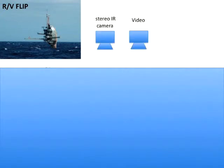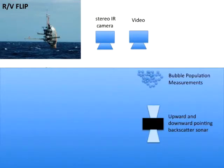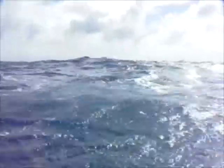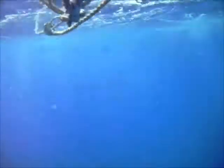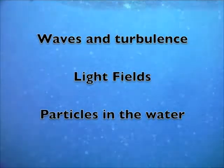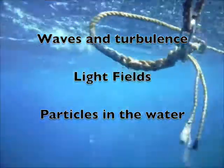On FLIP, instrumentation was mostly used to characterise the wave field and make localised measurements of the light field. The sea surface was recorded from above using video at visible and infrared wavelengths, and bubbles from breaking waves were monitored using underwater acoustical techniques. An instrument called Porcupine measured the fluctuating light field just below the ocean surface, and polarised radiance distributions were measured both above and below the surface. We'll discuss three groups of measurements: waves and turbulence, light field measurement, and particles and bubbles in the water.